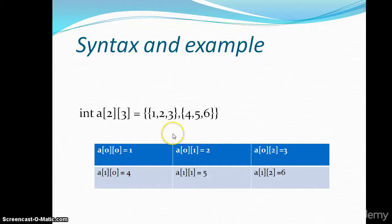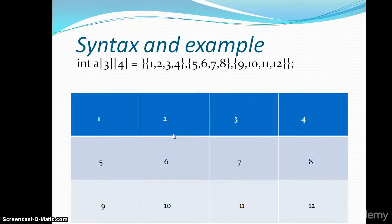Here 3 rows, 4 columns: 3 into 4 is 12. So this variable of type integer can store 12 integer values in its memory location.